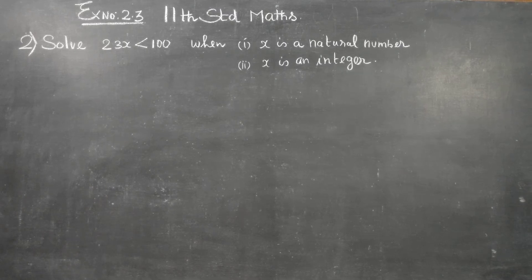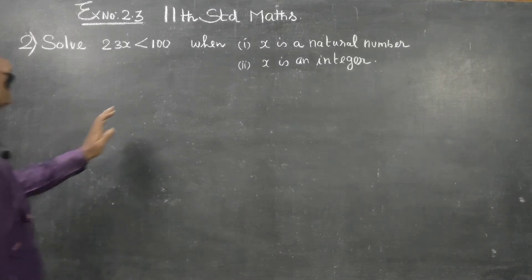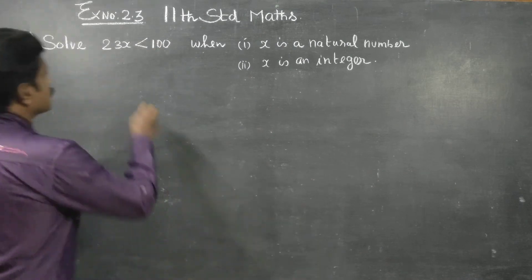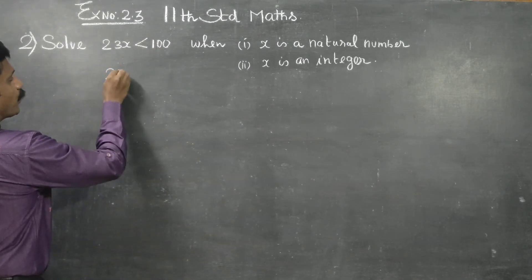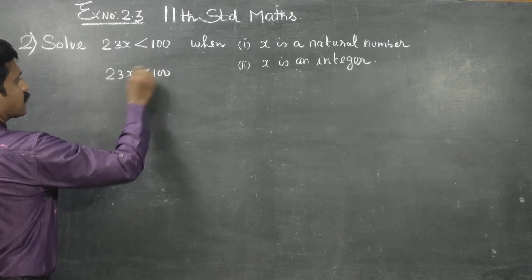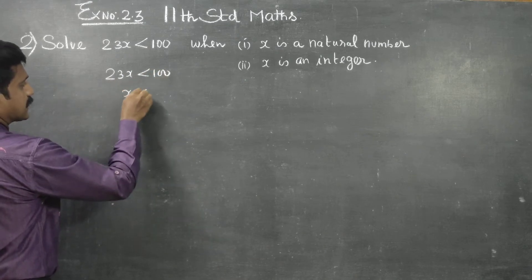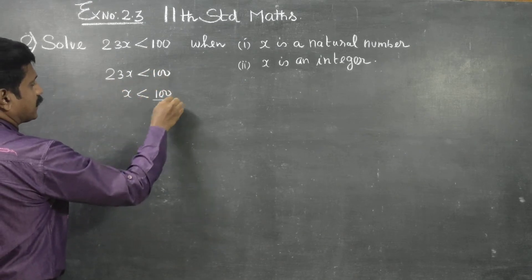Dear 11th standard students, in sum number 2, solve 23x is less than 100. 23x is less than 100 means you can divide by 23, so x is less than 100 by 23.